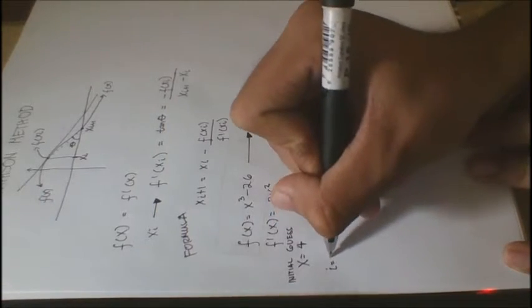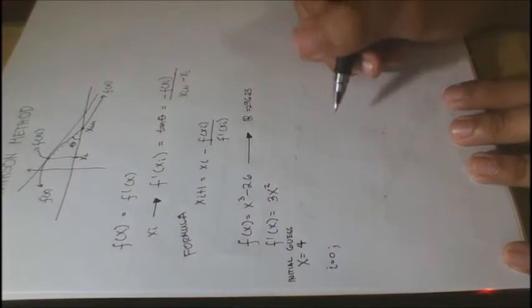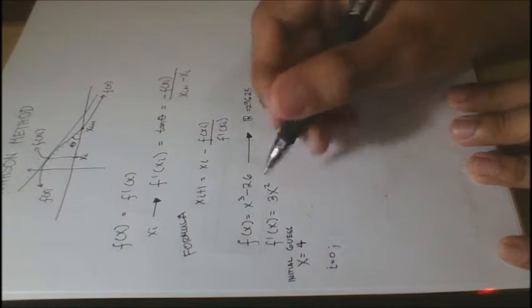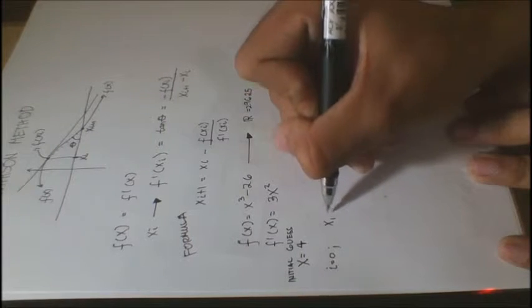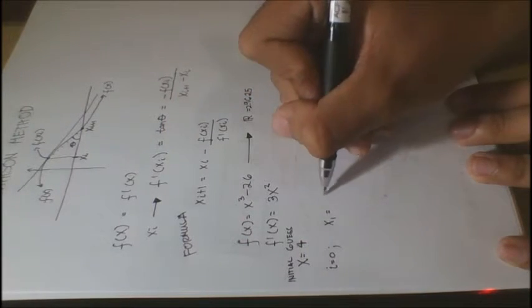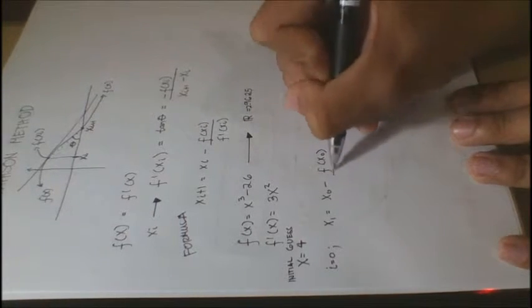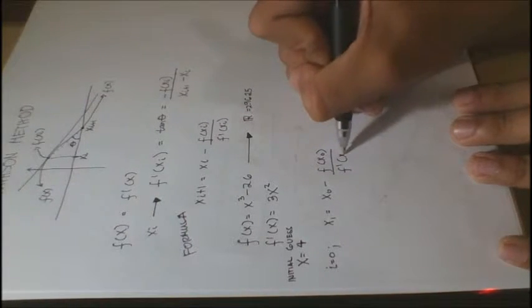So, at iteration equals 0, every time we have an iteration, it always starts 0 in Newton-Raphson method. So, for iteration 0, x1 is equal to x sub 0 minus f of x sub 0 all over f prime of x sub 0.